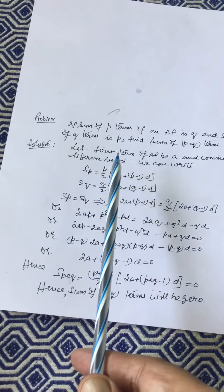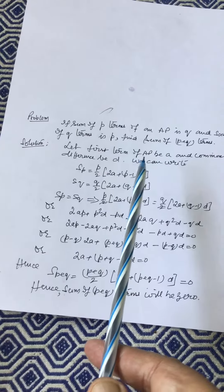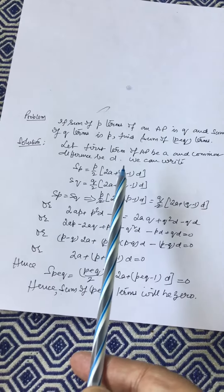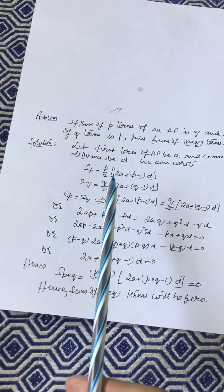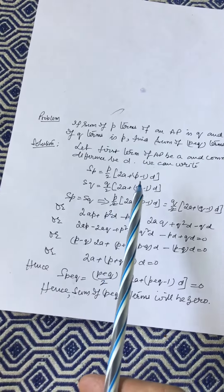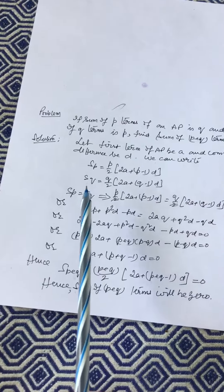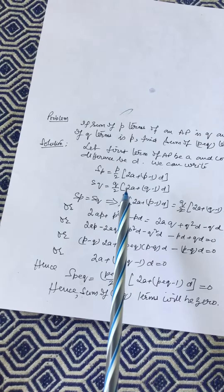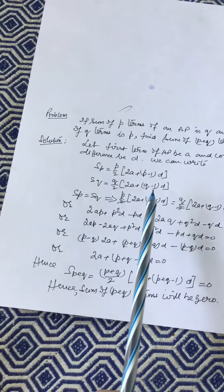Let first term of AP be A and common difference be D. We can write SP = (P/2)[2A + (P-1)D]. SQ = (Q/2)[2A + (Q-1)D].